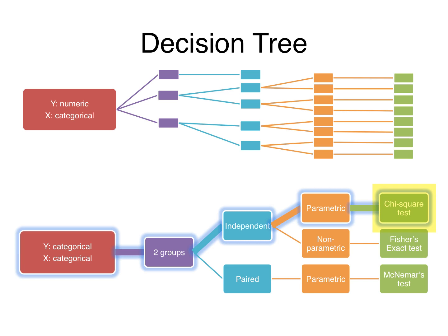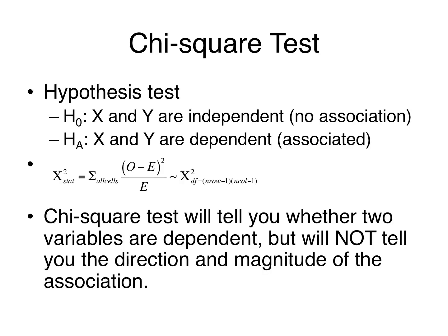So let's first talk about the chi-square test. This is the parametric test used when there are two independent groups in a categorical explanatory variable being compared with a categorical outcome. The chi-square test of independence is a parametric test for testing if two qualitative variables are independent of each other or dependent on each other. The null hypothesis is that the explanatory and outcome variables are independent — in other words, that there is no association between x and y.